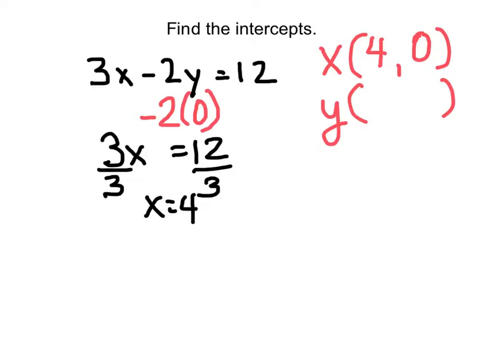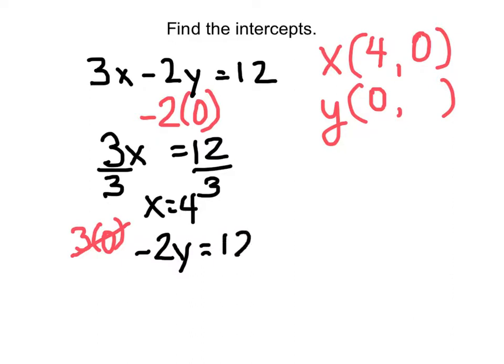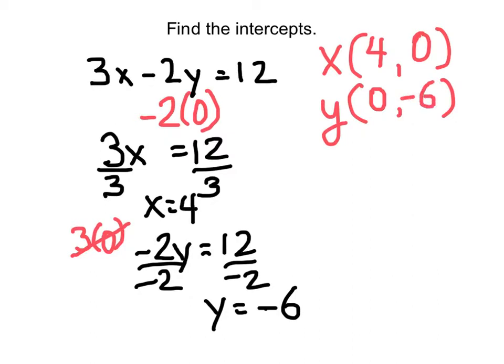Now let's find the y-intercept. We substitute 0 for x. 3 times 0 is 0, so that term drops out. What remains is negative 2y equals 12. Dividing both sides by negative 2 gives y equals negative 6. That's how we find intercepts, especially when the equation is in standard form — it makes it very simple.